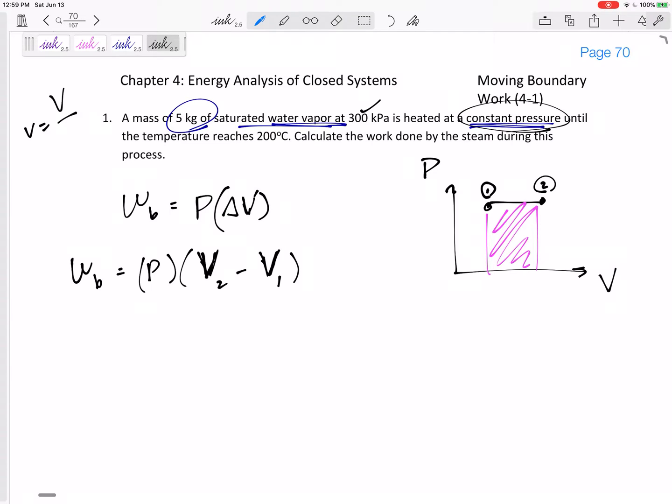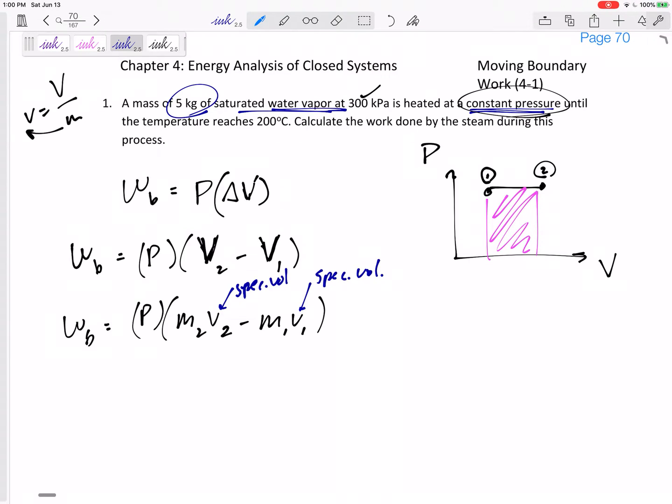The specific volume is total volume divided by mass. I can do mass times v2 minus mass times v1, where these are lowercase v's, specific volumes. Remember, these problems won't give it to you on a silver platter. M2 is the same as M1 since this is a closed system. We're in chapter 4, closed systems. So P times M times lowercase v2 minus v1.